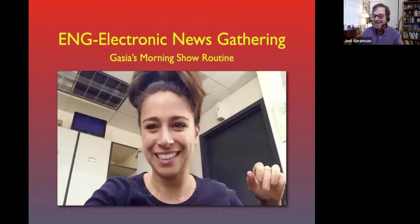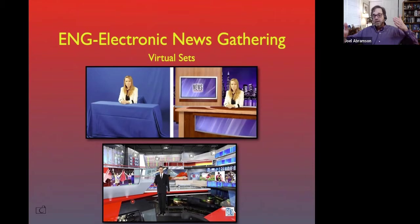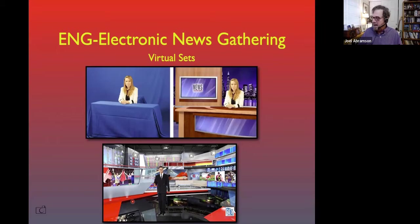We can also have virtual sets — instead of green, we're using blue, but we electronically put in the set. Sometimes you see this in cable quite a bit. This really takes some computer power because you have to have the cameras all coordinated so that if the cameras are shooting from different places, the background moves with them. This is kind of hard for us to set up in our studio because we kind of have to manually do it — we can't really do the virtual set like they do it in the pros, where they have software that keeps the background in the right perspective all the time.